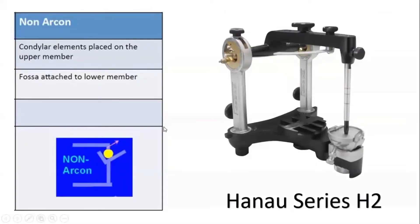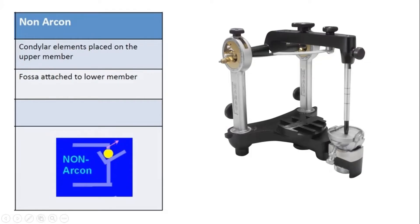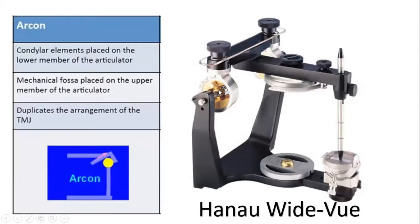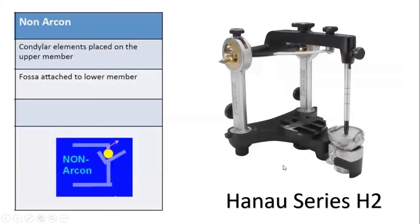In a non-arcon articulator, the condylar element is connected to the upper member of the articulator, and the condylar guidance (condylar track) is attached to the lower member. An example is the Hanao Series H2, which is a non-arcon articulator. You can see the condylar element is attached to the upper member, and the condylar guidance is attached to the lower member.